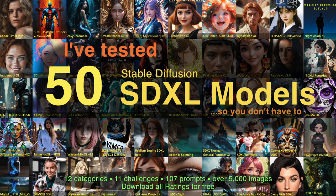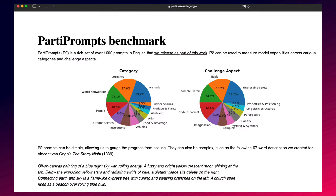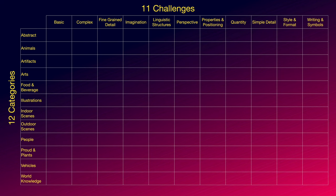Art is always very subjective, so I tried to find a structured approach rather than just telling you what I like and dislike. Luckily I found a method from Google research which helped me achieving this goal. It's called Party Prompts and consists of a structured prompt matrix with more than 1600 classified prompts, each assigned to a specific category and a challenge.